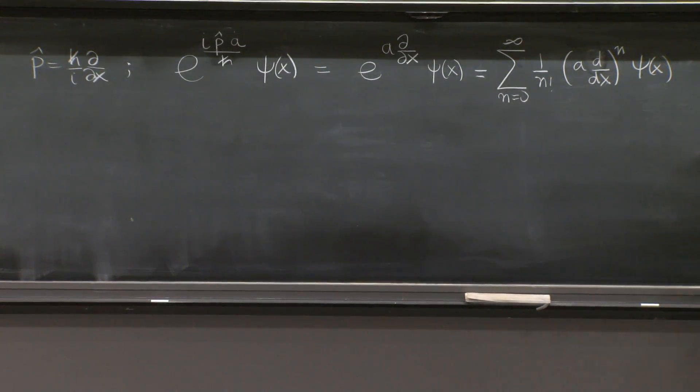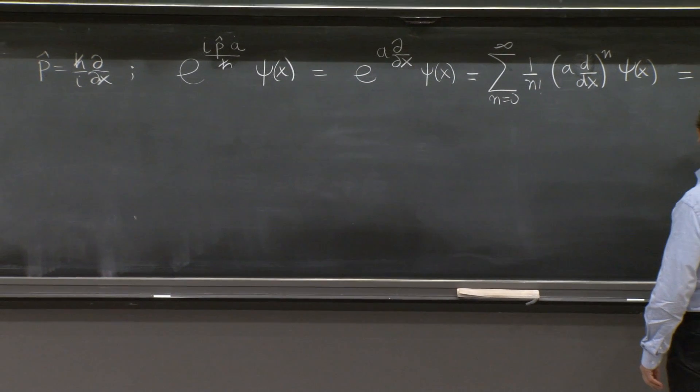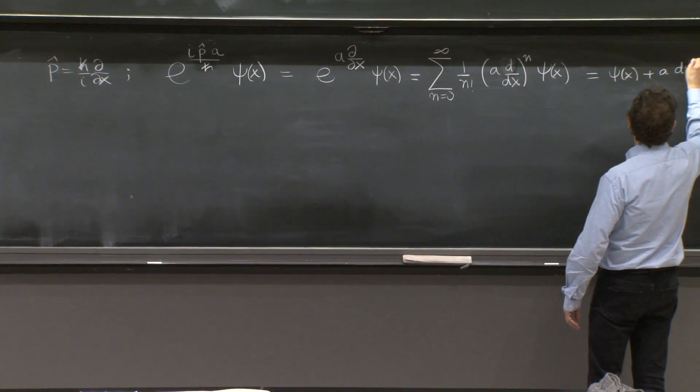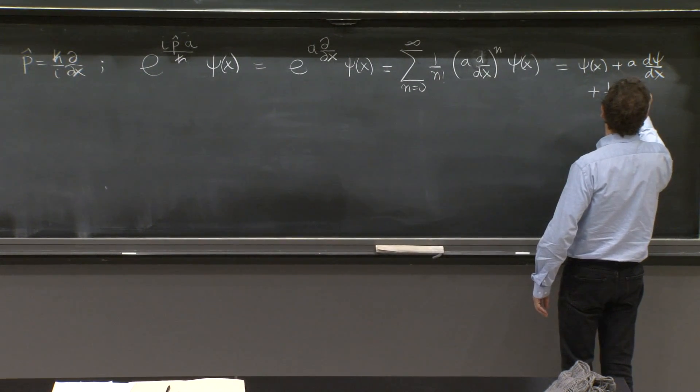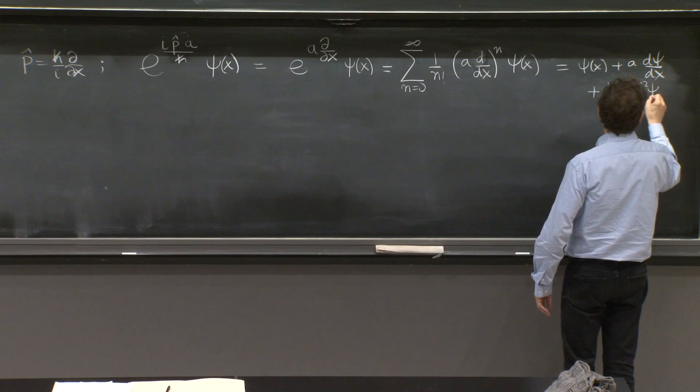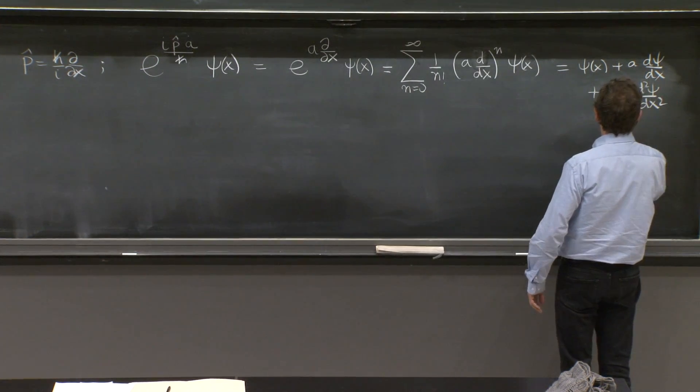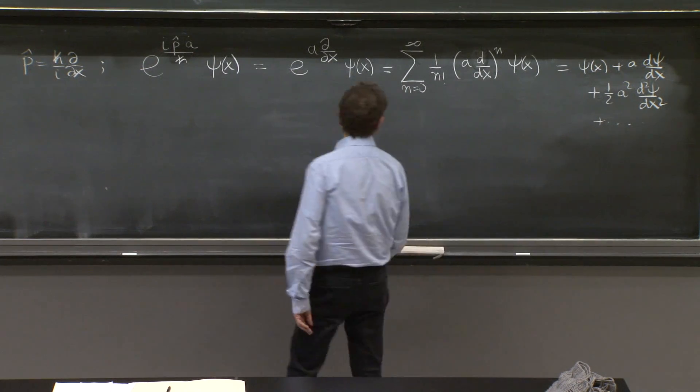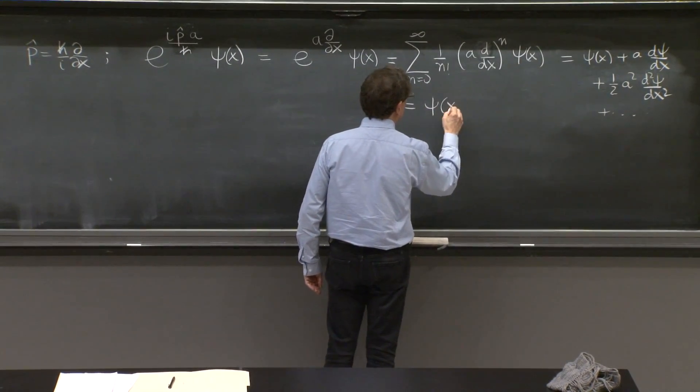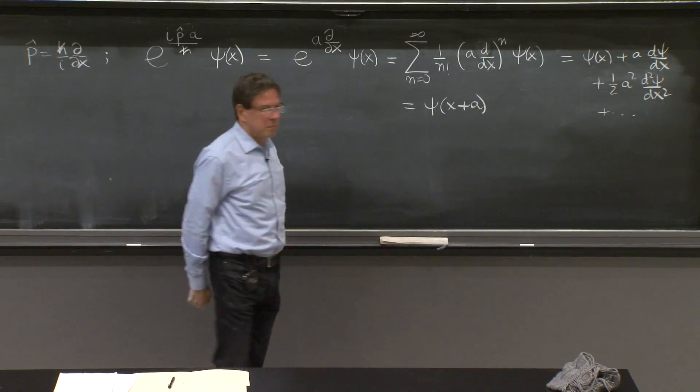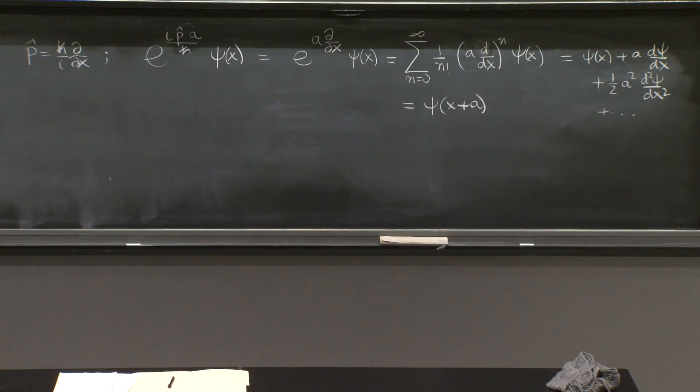And you see that, of course, this is psi of x plus a d psi dx plus 1 over 2 a squared, the second psi dx squared. But this is nothing else but the Taylor series for this. And there it is, the miracle. The e to the i momentum generates a translation. It really moves the wave function.